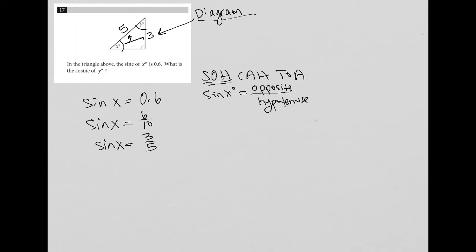Now from here, you can use Pythagorean theorem to figure out what this bottom leg equals, or you can recall that there's a special right triangle called a 3-4-5 right triangle, so that bottom leg must be 4.